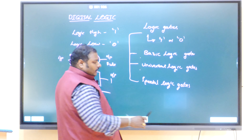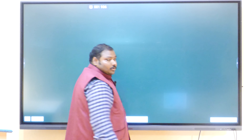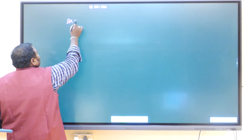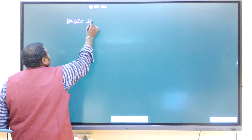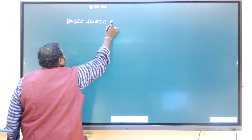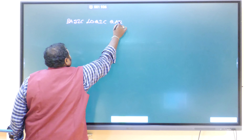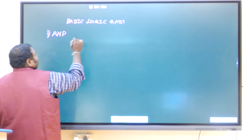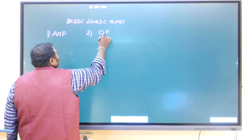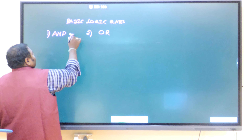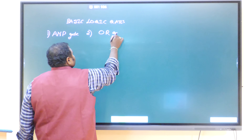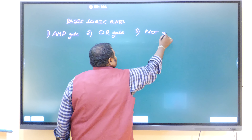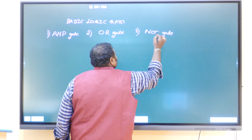In the next category, I will teach about basic logic gates. In basic logic gates we have three main categories: the first one is the AND gate, the second one is the OR gate, and the third one is the NOT gate, which is sometimes also called an inverter.